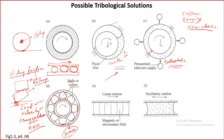Another type of tribological solution is the use of magnetic or electrostatic fields. If linear motion is necessary, we can separate two surfaces using a magnetic field. By creating a north pole on both sides, the two surfaces will repel each other. This repulsion can carry the load — whatever load is applied, the repulsive force must be sufficient to take the load or at least reduce the contact forces, thereby reducing friction. In the ideal case, the repulsive force takes all the load.